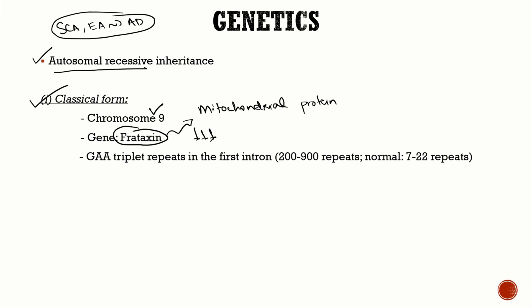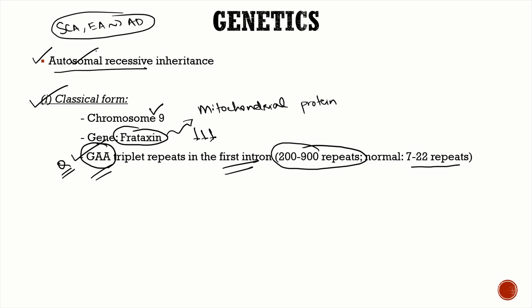Like spinocerebellar ataxias, Friedreich's ataxia is a trinucleotide repeat disorder, but here the repeated trinucleotide is GAA — a very important exam point. These GAA repeats are in the first intron. Normal individuals have 7 to 22 repeats, whereas Friedreich's ataxia patients have 200 to 900 repeats. Remember: GAA, autosomal recessive, and frataxin.